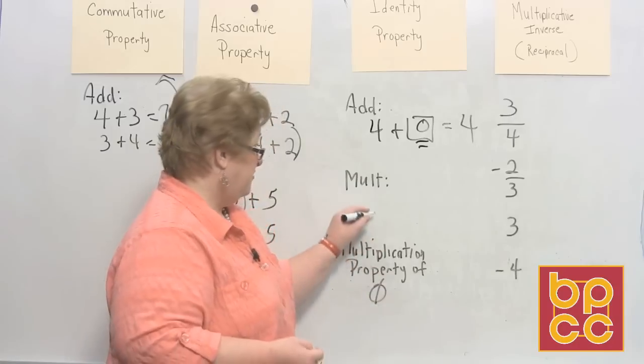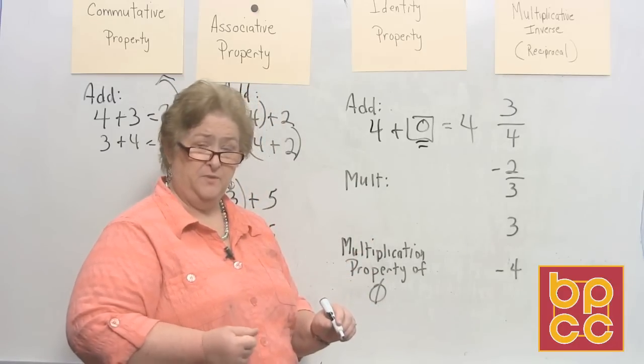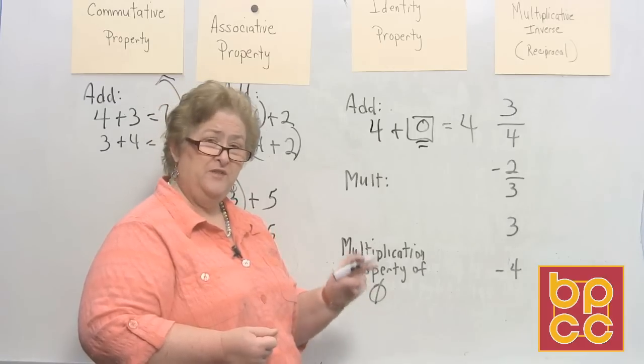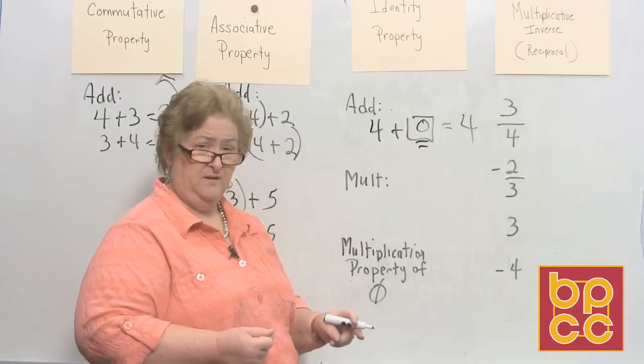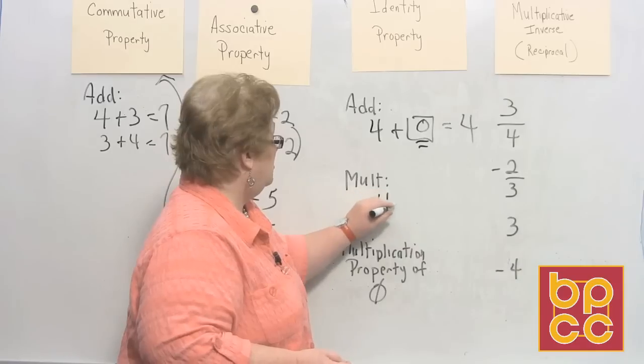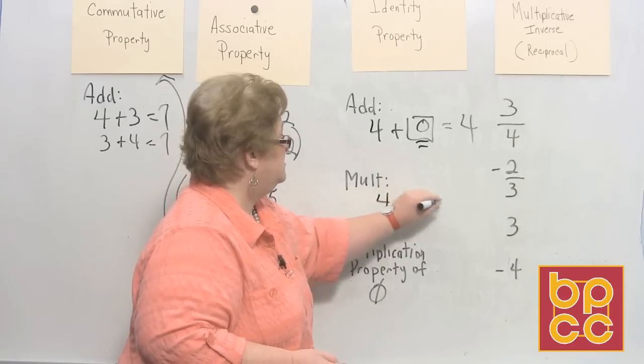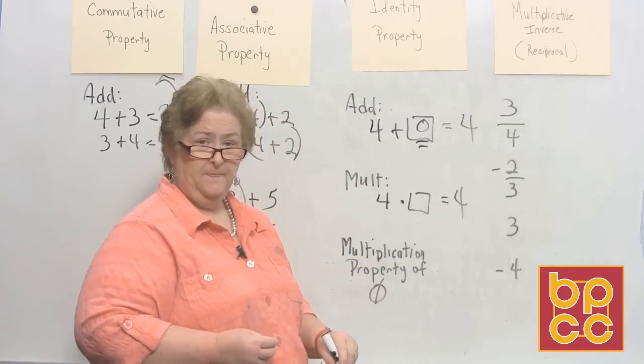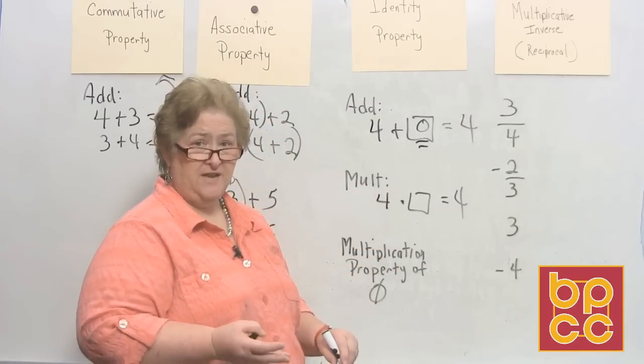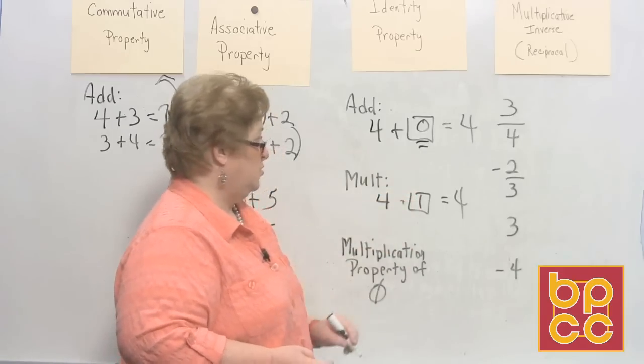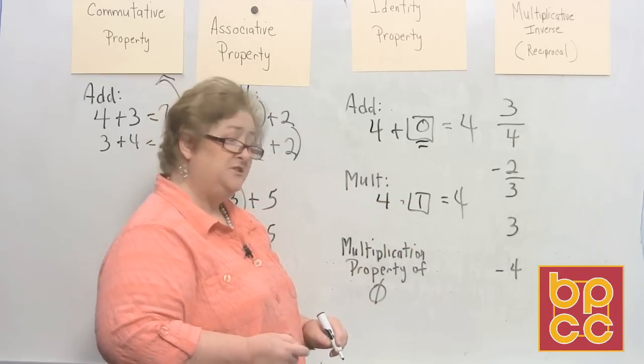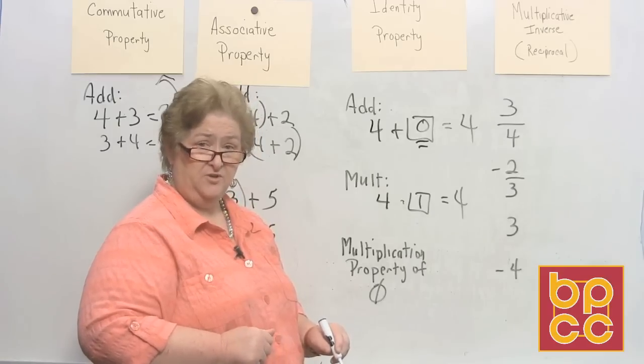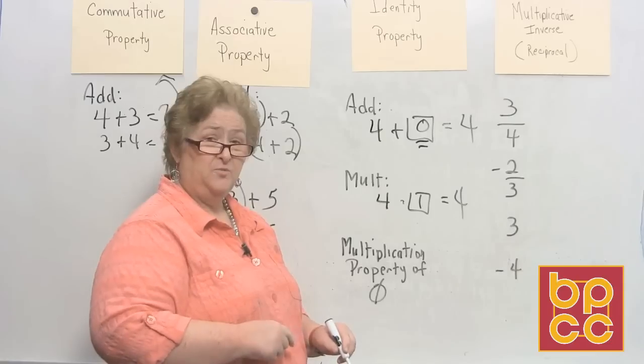And for multiplication, what do you think the identity would be for multiplication? If the identity for addition is 0, what would the identity for multiplication be? Let's use the same 4. Let's go 4 times what will keep us at 4? You know what it is. 4 times 1. 4 times 1 is the identity property for multiplication. 1 is the identity for multiplication. For addition, 0. For multiplication, 1.